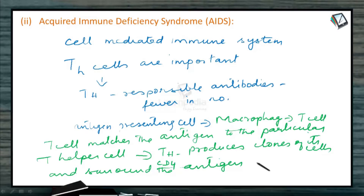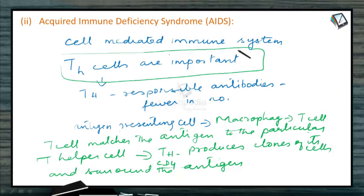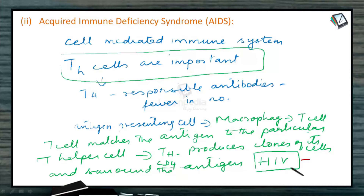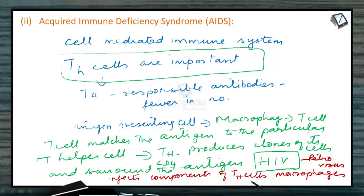Because the T helper cells are fewer in number, these people suffer from a lack of immune system protection. This is caused by HIV — Human Immunodeficiency Virus — which causes Acquired Immune Deficiency Syndrome. HIV is a Retrovirus that infects T helper cells, macrophages, as well as dendritic cells. The dendritic cells are situated all along the skin, like security sentries. They are all affected by this Retrovirus, which destroys the T cells that produce the specific antibodies.